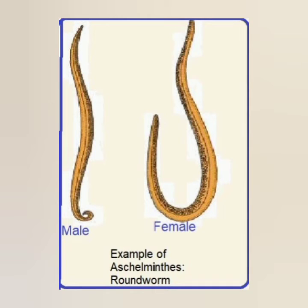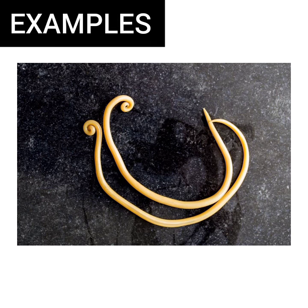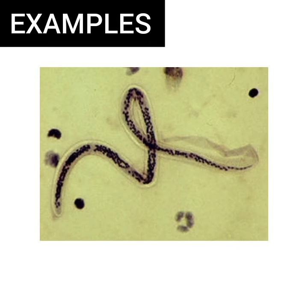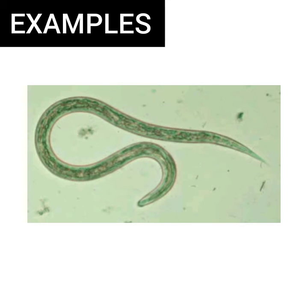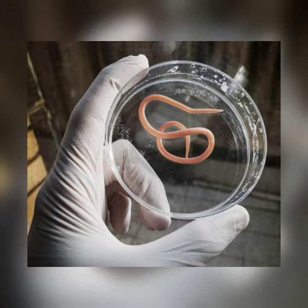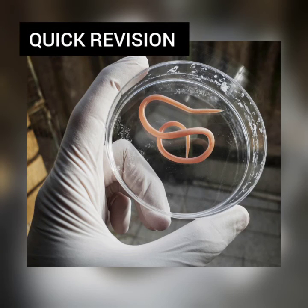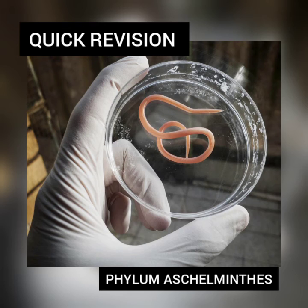Development may be direct or indirect. Examples include Ascaris, Wuchereria, and Ancylostoma. This was a brief explanation regarding phylum Aschelminthes, and I hope this video helps you in your quick revision.